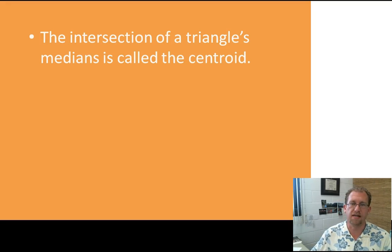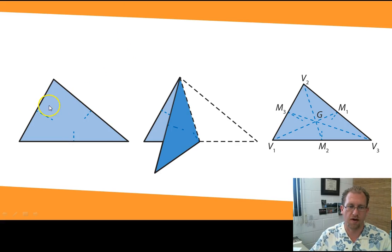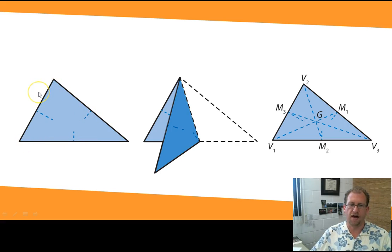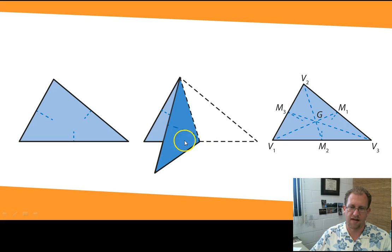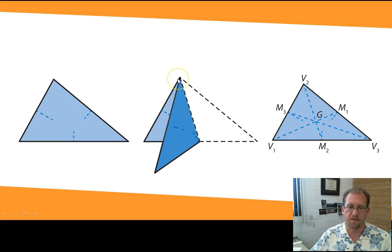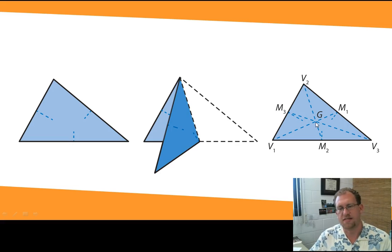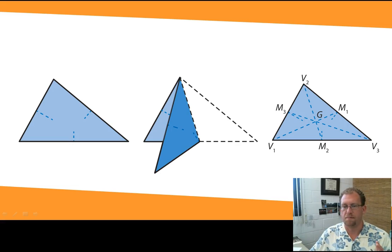The intersection of a triangle's medians is called the centroid. Here we have a triangle, and I'm going to draw a line from each vertex so that it cuts the opposite side in half. If I fold the triangle along all three of these medians, I will find that they are concurrent at a certain point — and that is the centroid. This is the center of the triangle as defined by its medians, and you find all three medians to locate the centroid.